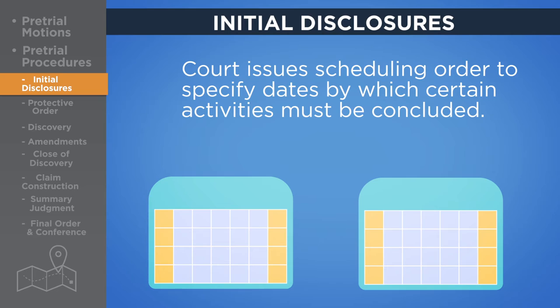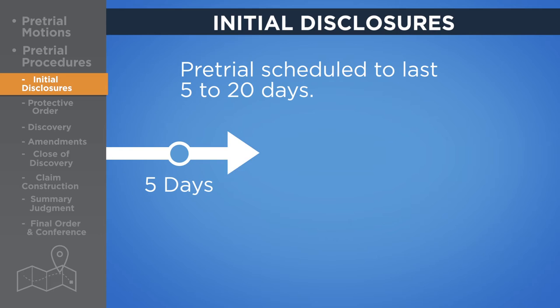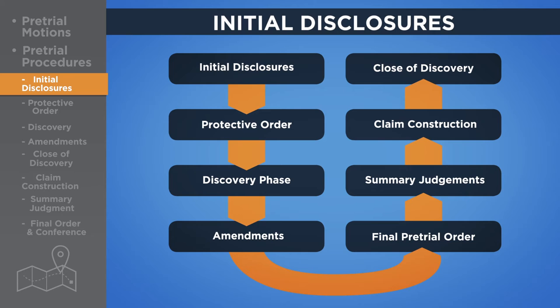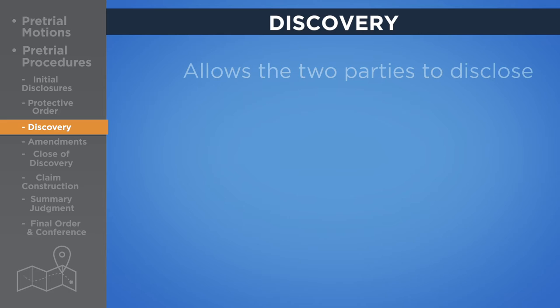This order often splits the difference between the plaintiff's and defendant's proposed schedules — the plaintiff usually seeks speed, while the defendant delays. A typical patent trial is scheduled to last from 5 to 20 trial days, but some can take much longer. Beginning with a protective order, which is an agreement specifying who can access the confidential information produced during the discovery phase.